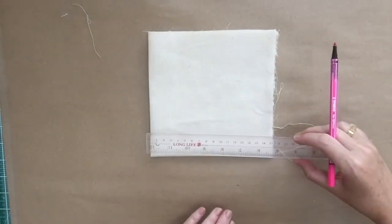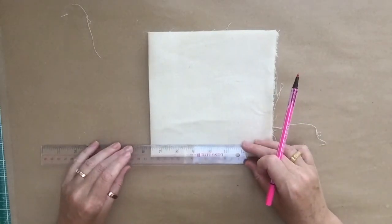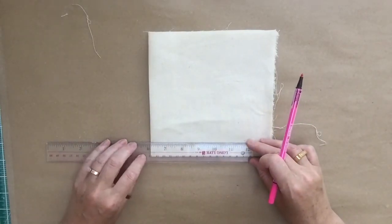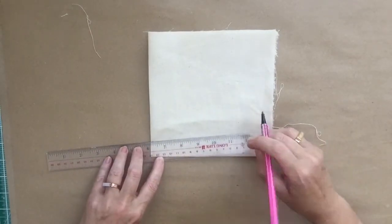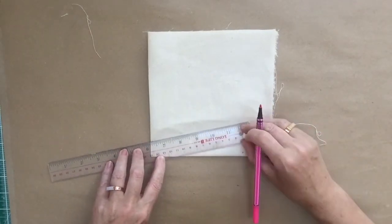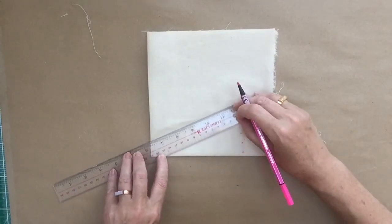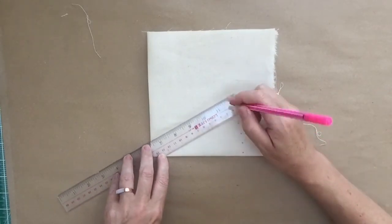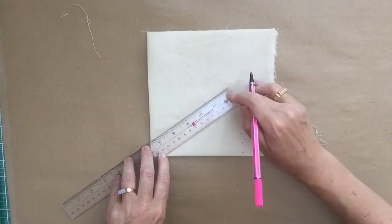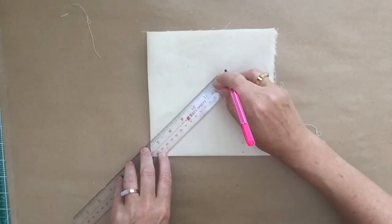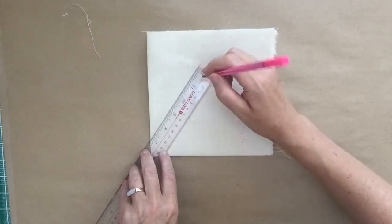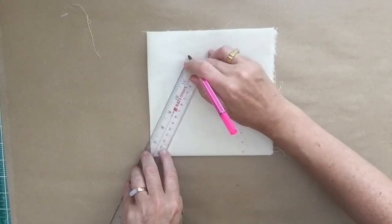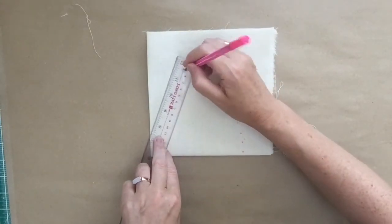My circle is going to be approximately 14 centimeters from the center of the fold. My ruler has a hole in it, which is really useful, but you can do this without a ruler with a hole, as long as you have some kind of ruler or tape measure. You're just moving it an even amount away from the center of the circle and marking it with a pen. I'm using a pink pen so you can see it, but you can use whatever you want.